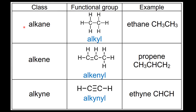Next we'll look at all the classes and functional groups that you need to know for standard level chemistry. The first example is the alkanes which have carbon to carbon single bonds — an example is ethane. Next we have the alkenes which have carbon to carbon double bonds — an example is propene. Next we have the alkynes which have a carbon to carbon triple bond — an example is ethyne.